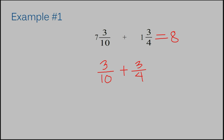We need to find a common denominator to add. Right now we have a 10 and a 4. The least common denominator between these two fractions is going to be 20, so I'm going to rewrite both fractions with a denominator of 20. To go from 10 to 20, I multiplied by 2. The rule is whenever you multiply the denominator by a number, you have to multiply the numerator by that same number. So 3 times 2 is 6. To go from 4 to 20, I multiplied by 5, so 3 times 5 is 15.